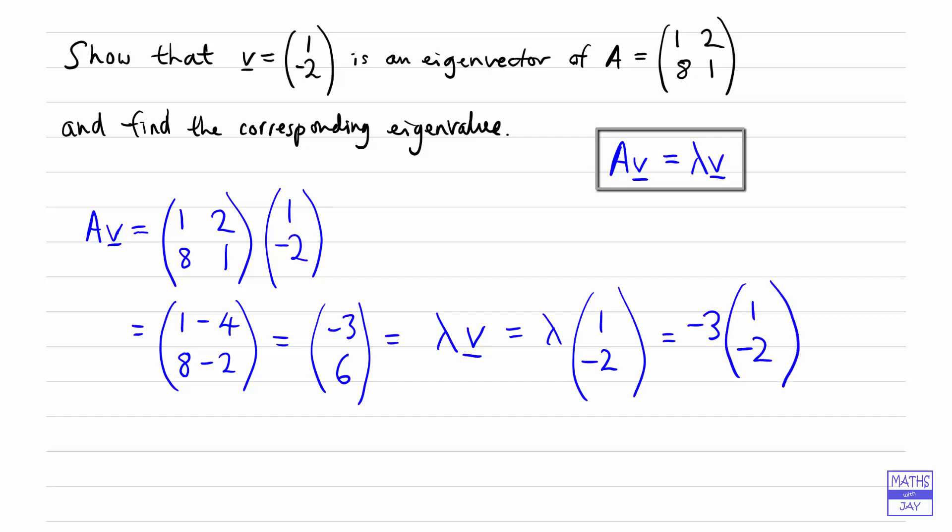So because we can write that down, that shows that V is an eigenvector of A, and we can see that lambda is equal to minus 3. So minus 3 is the eigenvalue corresponding to the eigenvector (1, -2).